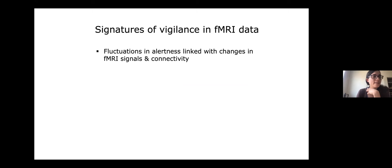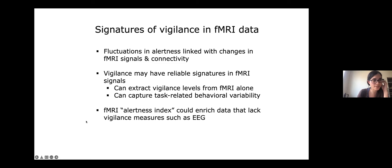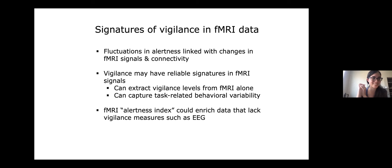To summarize: fluctuations in alertness are closely linked with changes in fMRI signals and connectivity, and the patterns may be reliable enough to allow us to extract vigilance information from fMRI alone, capturing task-related behavioral variability. This is useful because many fMRI datasets don't have indicators of alertness like EEG, pupillometry, or behavioral measures. If we can read out brain state information from fMRI alone, we might look at how brain state effects interact with behavior and cognition, remove them if not interested, or isolate time points where people are sleeping to exclude them from analysis.